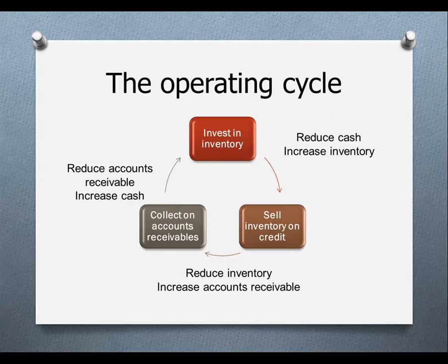If we look at this cycle, we invest in inventory, we sell the inventory on credit, collect on accounts receivable, and then when the cash comes in, the company can either repay some of the short-term financing, invest in more inventory, or keep the cash on hand to help with the next part of the seasonal cycle.